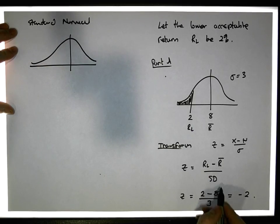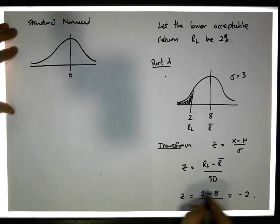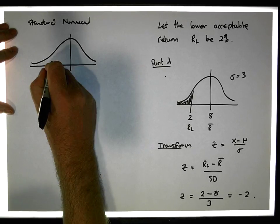When we put in 8 here, it'd be 8 minus 8, zero divided by the standard deviation gives us zero. So Z for 8 would be equal to zero. When we put in 2, 2 went to minus 2, which is over here.